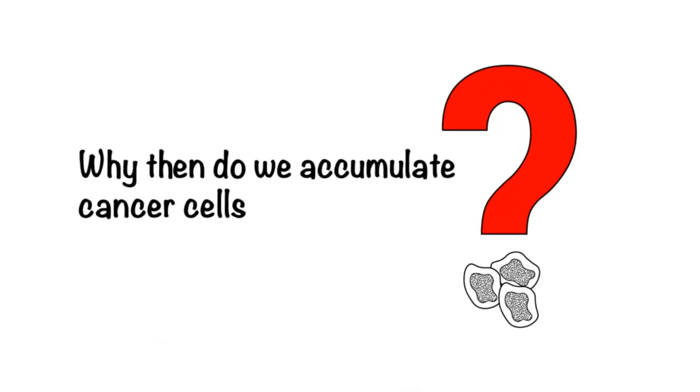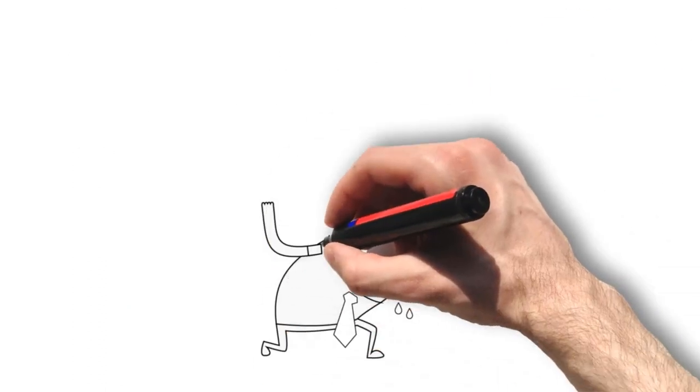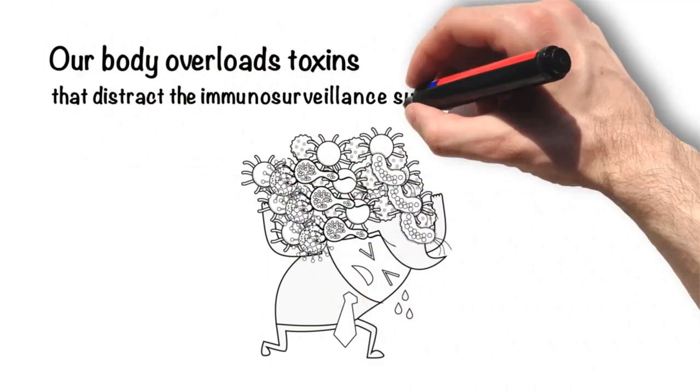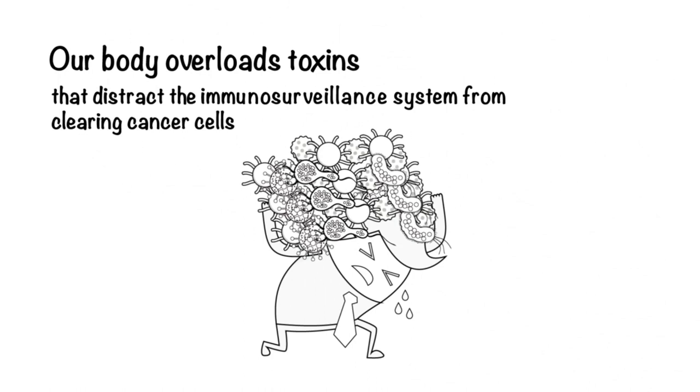Why then do we accumulate cancer cells? Our modern lifestyle accumulates more toxins in our body than our body can excrete. This overloads and distracts the immunosurveillance system from clearing cancer cells.